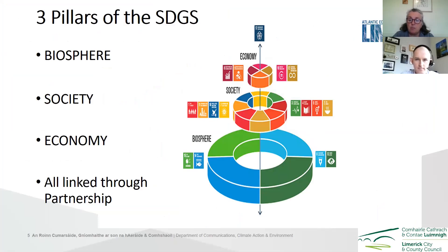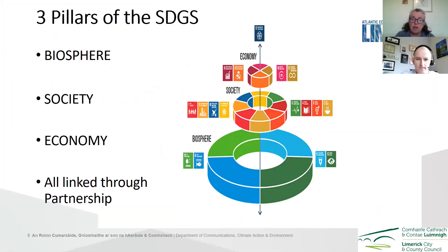With the goals, we have three pillars: the biosphere being the base pillar — the largest one — followed by society, which has around seven or eight goals linked with it, and then the economy, which has four goals linked with it. The very top goal is partnership, where all these things link together. The biosphere is basically the world we inhabit — it's what sustains us as human beings.